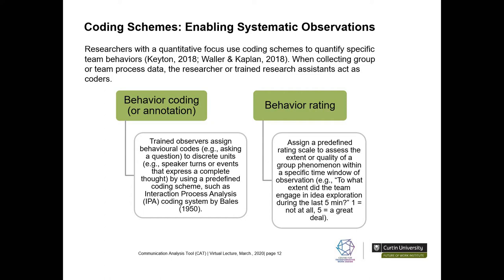Behaviour coding requires trained observers to assign behavioural codes — such as 'asking a question' — to discrete units such as speaker turns, using predefined coding schemes such as the well-known Interaction Process Analysis coding system by Bales. Behaviour rating, on the other hand, requires trained observers to assign a predefined rating scale to assess the extent and quality of a group phenomenon within a specific time window. For example, to what extent did the team engage in idea exploration during the last five minutes, rated from one — not at all — to five — a great deal.